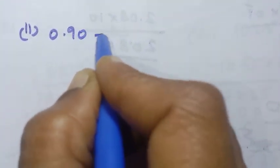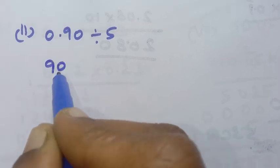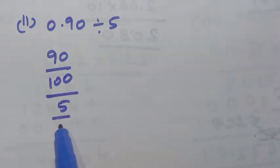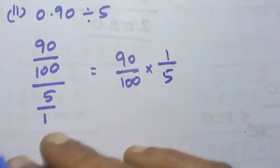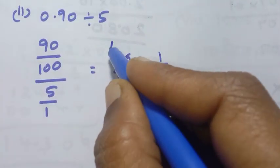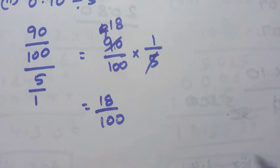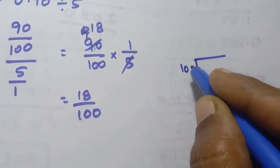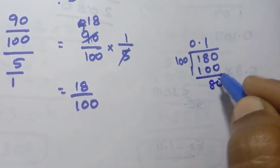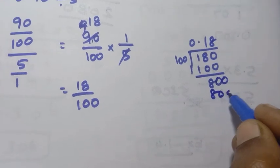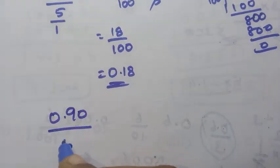0.90 divided by 5. There are two decimal places, so 0.90 is written as 90 by 100. Divided by 5, so 5 by 1 in the denominator. That gives 90 by 100 into 1 by 5. Now cancel: 5 into 90 — 5 ones are 5, remainder 4; 5 eights are 40 — giving 18. So we get 18 by 100. Dividing gives 0.18 as the answer.